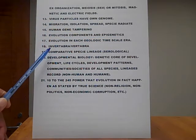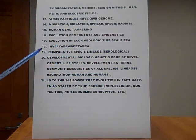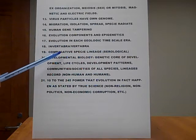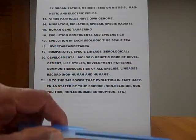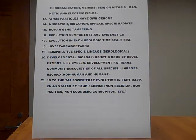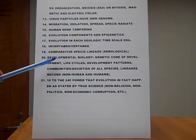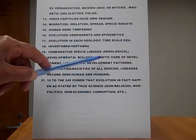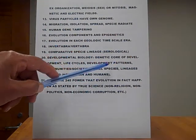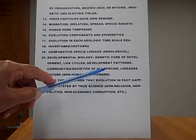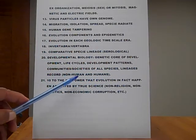Number eighteen: invertebrates and vertebrates. Nineteen: comparative species lineage, serological — this is a science, serology. And number twenty: developmental biology. This includes genetic core of development, life cycles, development patterns, communities and societies of all species, lineages, record, non-human and humans.